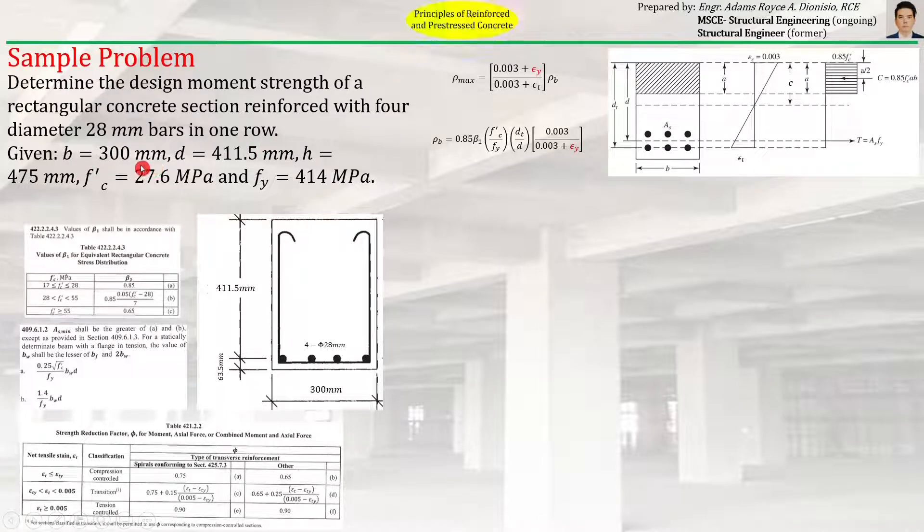Given: width 300 mm, effective depth d = 411.5 mm, total depth h = 75 mm, f'c = 27.6 MPa, and fy = 414 MPa.